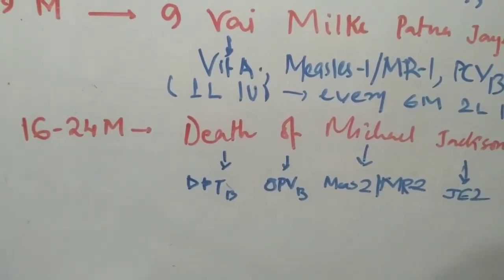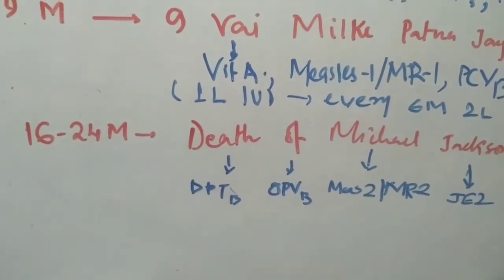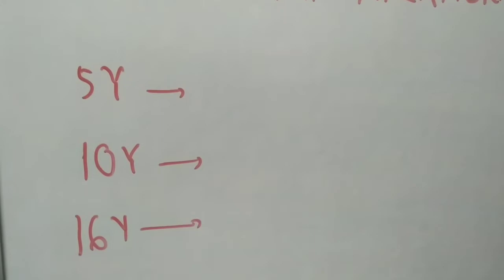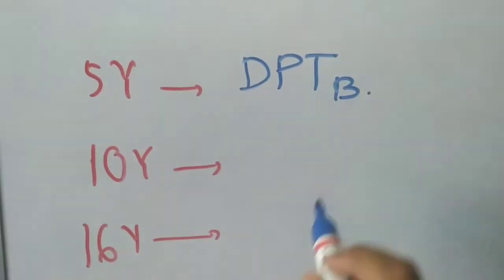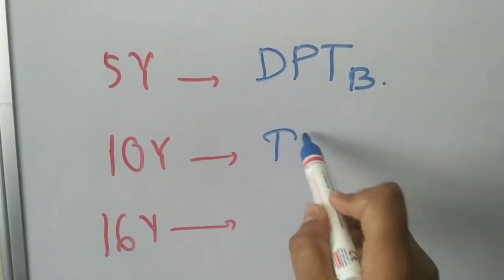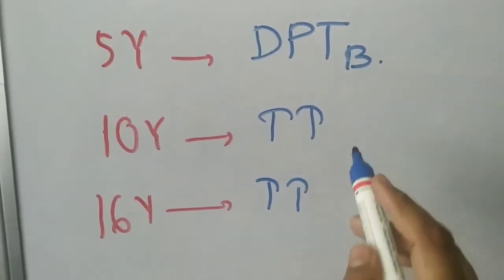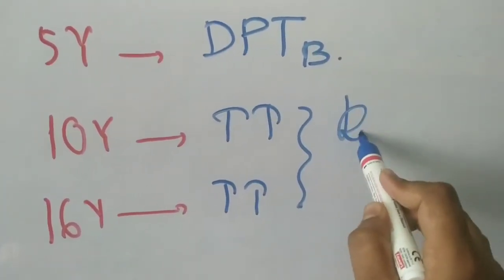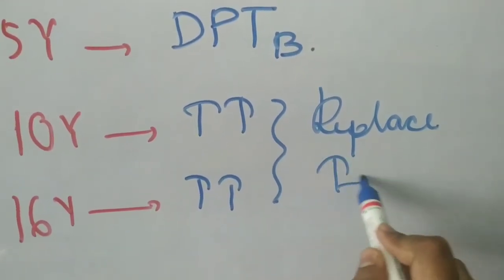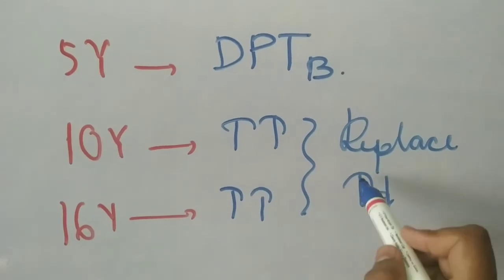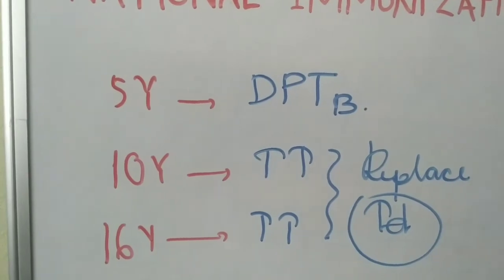We can see what happens at 5 years, 10 years, and 16 years. In 5 years basically DPT booster dose was given. In 10 and 16 years, TT was given. Today TT was replaced in the new immunization schedule. This is an important point that you will remember. Basically, this was the National Immunization Schedule.